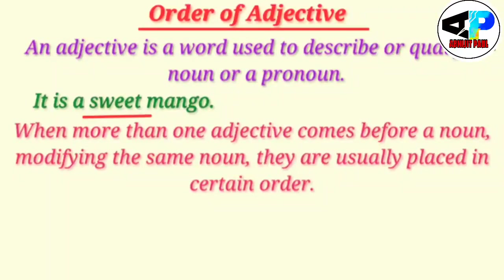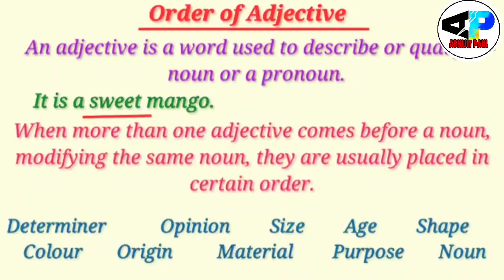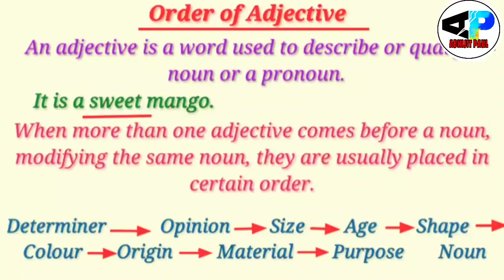What are the orders? The orders will be in this way: the first thing will be determiner, then opinion, then size, then age, then shape, then color, then origin, then material, then purpose, and finally the noun we are talking about.